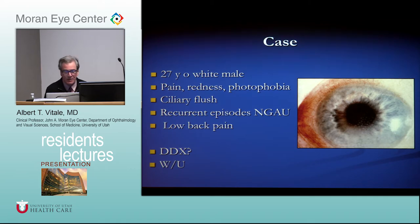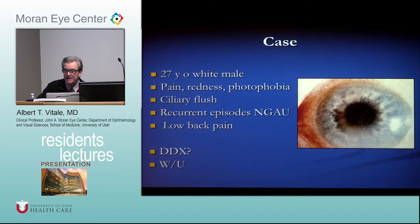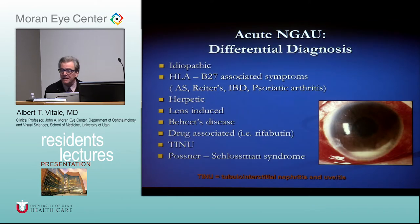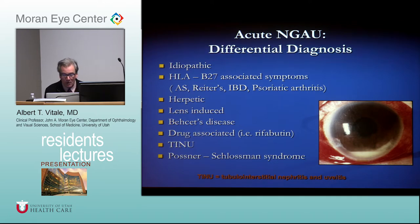We'll start with a 27-year-old white male presenting with pain, photophobia, ciliary flush, and lower back pain. The differential diagnosis for this patient presenting with acute anterior non-granulomatous uveitis includes: idiopathic as number one, HLA-B27-associated spondyloarthropathies, herpes, lens-induced, Behcet's, drug, TINU, and Posner-Schlossman syndrome.